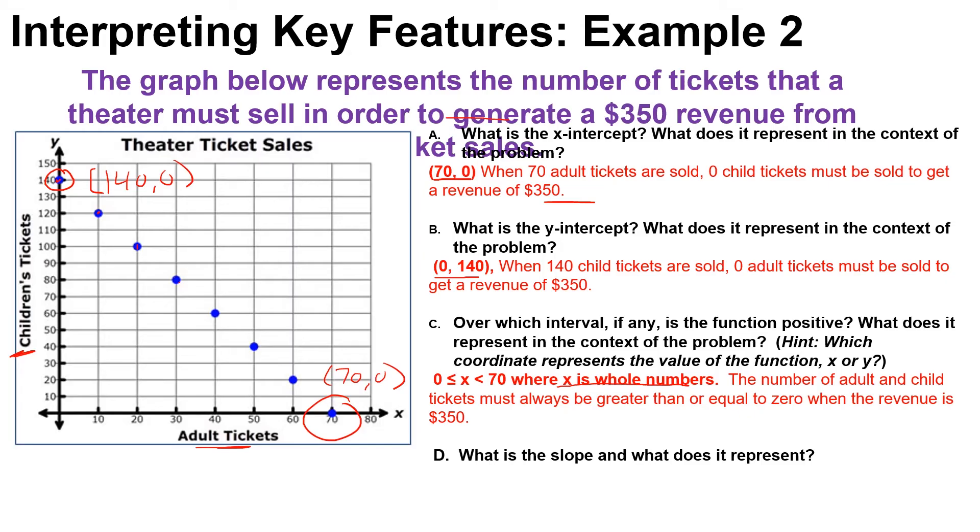It says the number of adult and child tickets must always be greater than or equal to zero when the revenue is $350. So no negative amount of tickets here. From zero to 70, it must be positive.